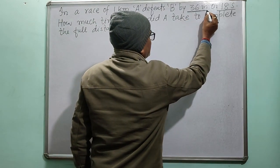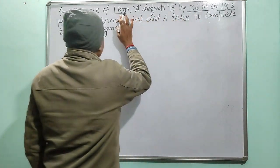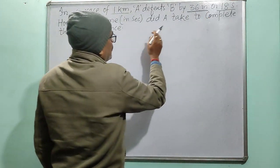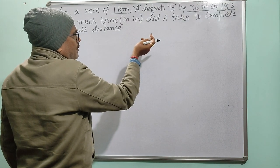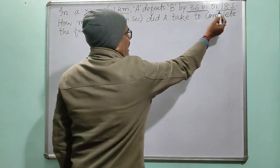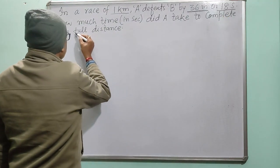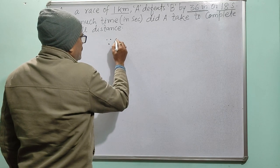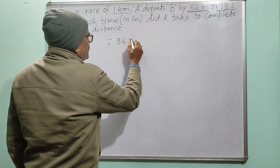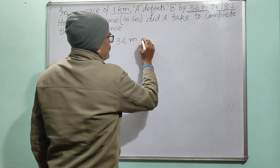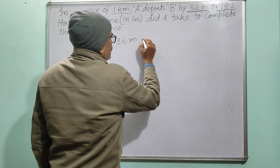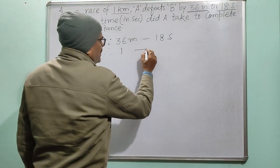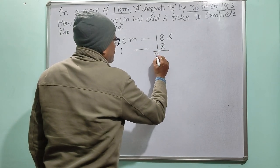This is the information: this is 1000 meters and this is the time. Since B covers 36 meters in 18 seconds, for 1 meter it's 18 by 36.